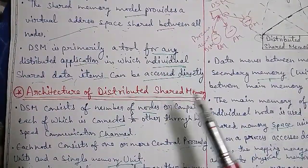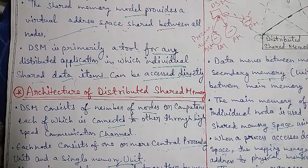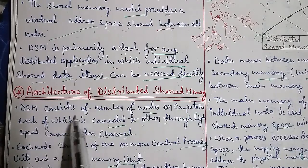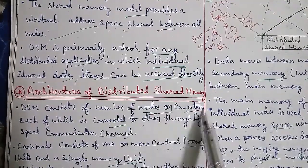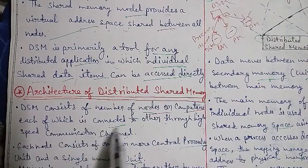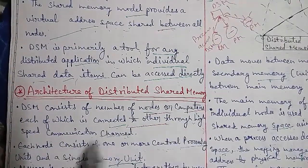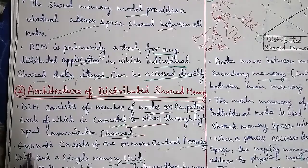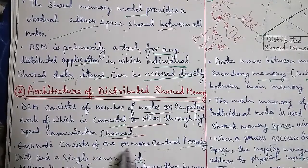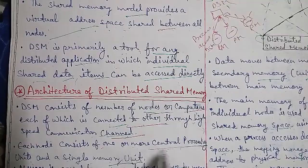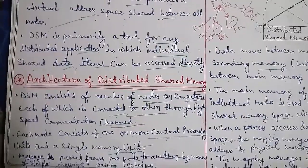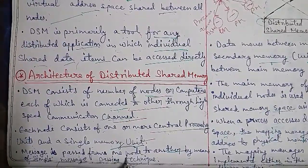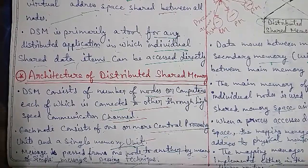A DSM system consists of a number of nodes or computers, each of which is connected to the others through a high-speed communication channel. Each node consists of one or more central processing units and a single memory unit. Memory is passed from one node to another by means of a simple message passing technique.